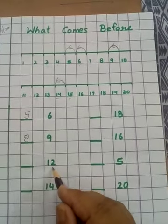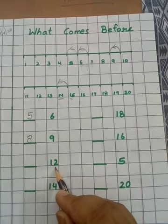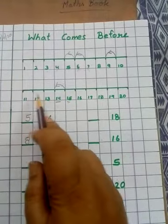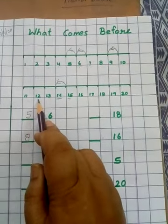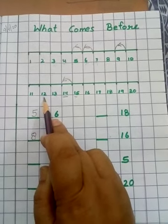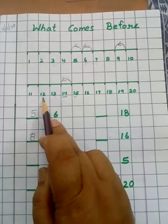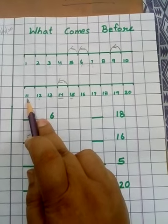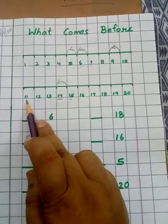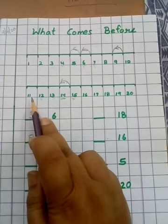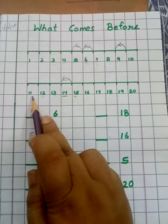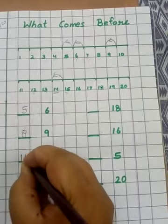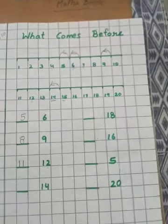Next number is 12. What comes before 12? Look at the number line again. Here is 12. Again, in the backward counting, 11 is just before 12. 12 के ठीक पहले कौन सा number है? It's 11. So here we write 11 — यहाँ पर हम लिखेंगे 11.